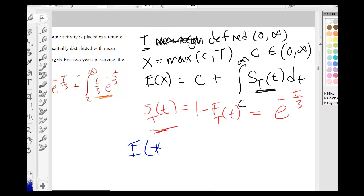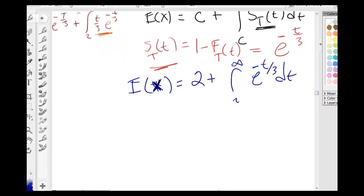which means that we can very easily solve this problem by saying that E(x) equals 2 plus the integral from 2 to infinity of e to the negative t/3 dt.